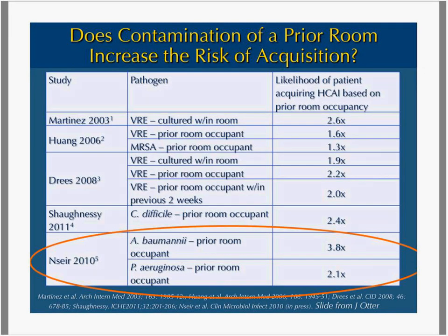There are also other associations. Looking at different organisms and different studies, the likelihood of a patient acquiring a healthcare-associated infection or resistant organism is based on the type of patient that was in that room beforehand. For example, if you've been in a room with VRE that was cultured in that room, you're 2.6-fold more likely to acquire VRE.